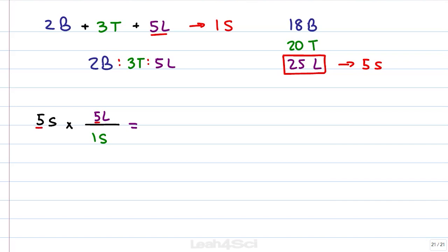If we run the math, 5 times 5 is 25, sandwiches cancel, answer in units of lettuce, 25 lettuce used up, 25 lettuce provided, completely used up. We knew that, but what about turkey?